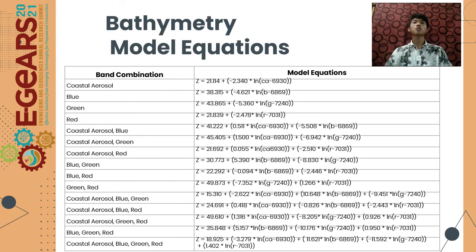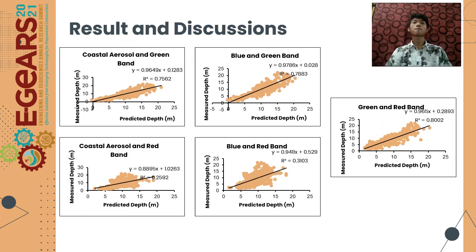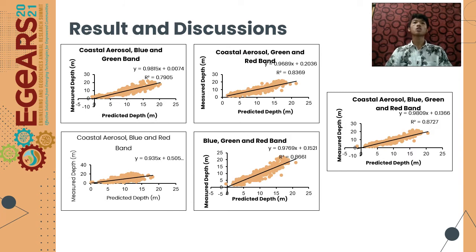From the regression coefficients obtained, model equations were then created to predict or estimate the bathymetry. Scatterplots of the 15 band combinations show the linear relationship of the predicted values with respect to the measured values. These are presented for single bands, combinations of two bands, combinations of three bands, and the combination of four bands.